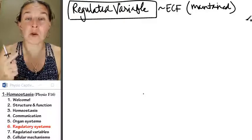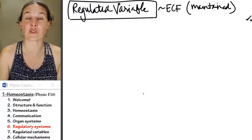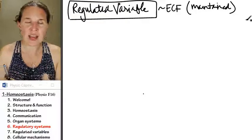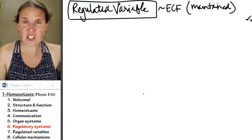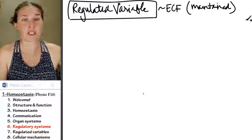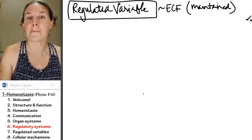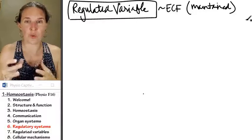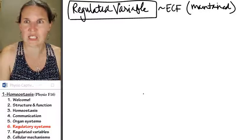This is the first thing. The regulated variable must be related to the extracellular fluid. If you can't make a connection, there are all sorts of processes that have nothing to do with the extracellular fluid. And we're still going to study them, and they're awesome and super interesting, but they're not homeostatic.